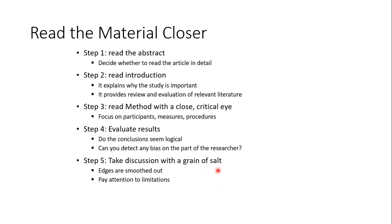Take the discussion with a grain of salt — you might find some flaws, and the study may have been designed to smooth over certain issues. Pay close attention to the limitations section; this is very important. If the paper highlights its limitations, it means this particular paper is, to an extent, a genuine paper — one that has been done thoroughly. You can focus on such papers as reliable sources.